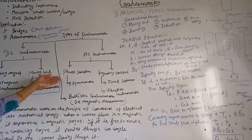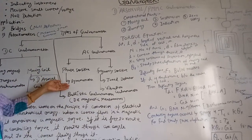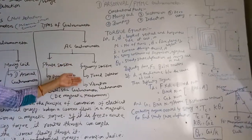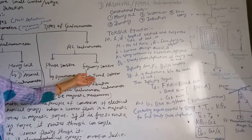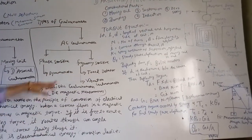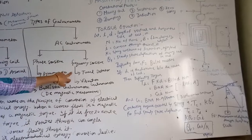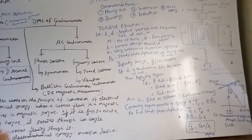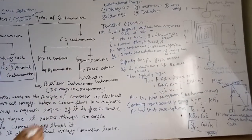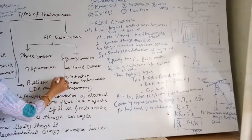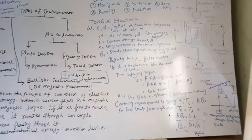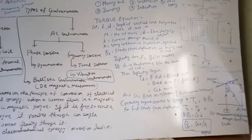Phase sensitive is the dynamometer type, and frequency sensitive galvanometer is the tuned detector type. Another type of frequency sensitive galvanometer is the vibration galvanometer, and we will study it in detail.